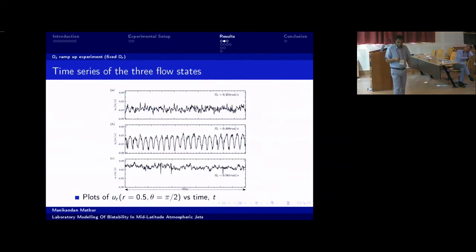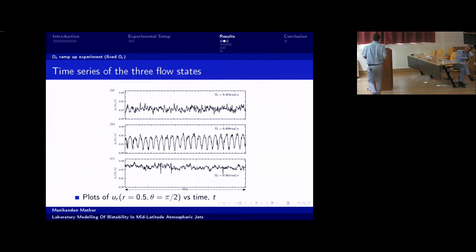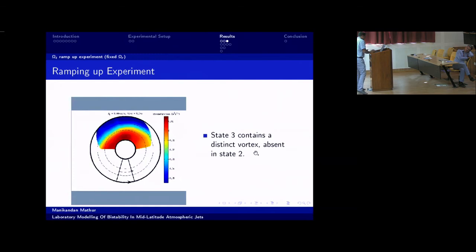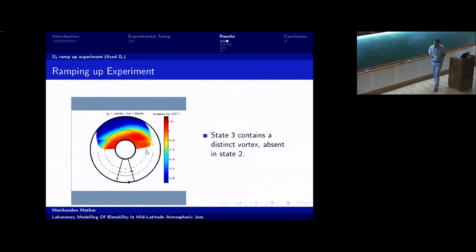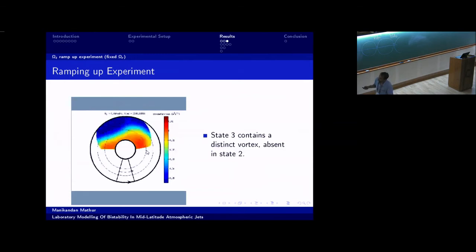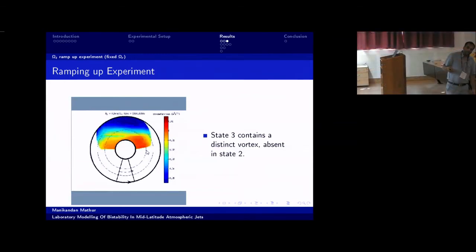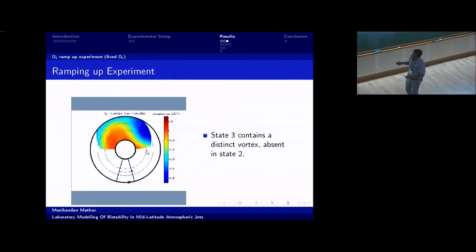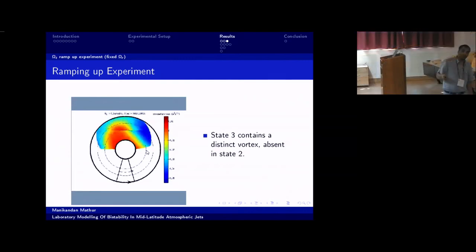Plotting the time series at a specific spatial location shows strong oscillations in state two and a more or less constant flow with turbulent fluctuations in state three. From the instantaneous flow field, the stream function is constructed and visualized as a movie. As omega_t increases — with omega_r held fixed — a transition to a clearly propagating state is seen, followed eventually by the blocked state where the flow field is more or less stationary except for turbulent fluctuations. The blocked state is characterized by the presence of a strong vortex.